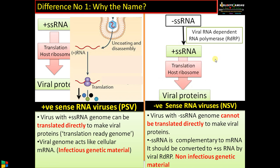It will be recognized by the host ribosome and that RNA is translated to viral proteins. So in the case of NSV, or negative sense RNA viruses, the genome or genetic material is non-infectious. Once inside the host, the genetic material must be converted to positive single-stranded RNA in order to become infectious and form the viral proteins.